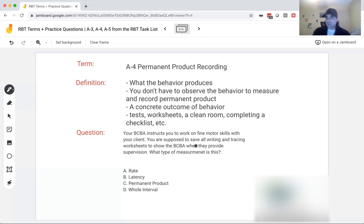So what are they asking you to do? They want you to save what that skill is producing. In this case, writing and tracing worksheets. That way, they can come back behind you every week or every other week, look at the worksheets, compare the worksheets, compare the product, the permanent product, and measure what kind of progress they're making.